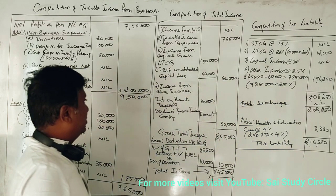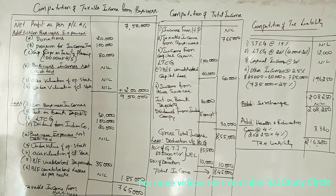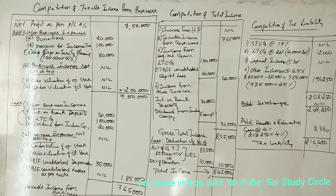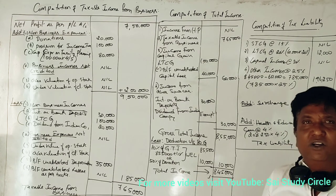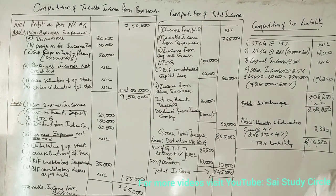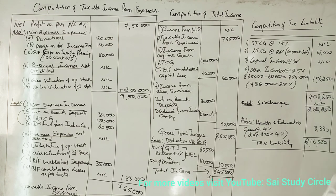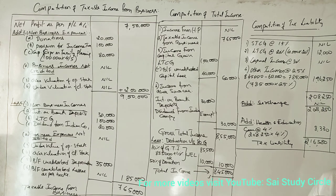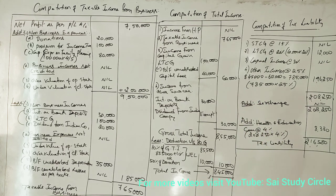This is a question for 14 marks. For all problems, if they ask to calculate tax liability without specifying anything, we follow normal tax provisions. If it is clearly given as MAT under Section 115JB, then we calculate it differently. Since 115JB may not have been covered yet, we solve under normal provisions.